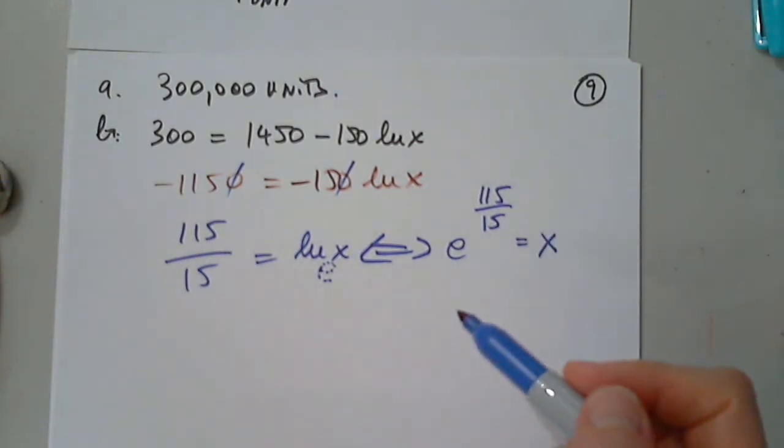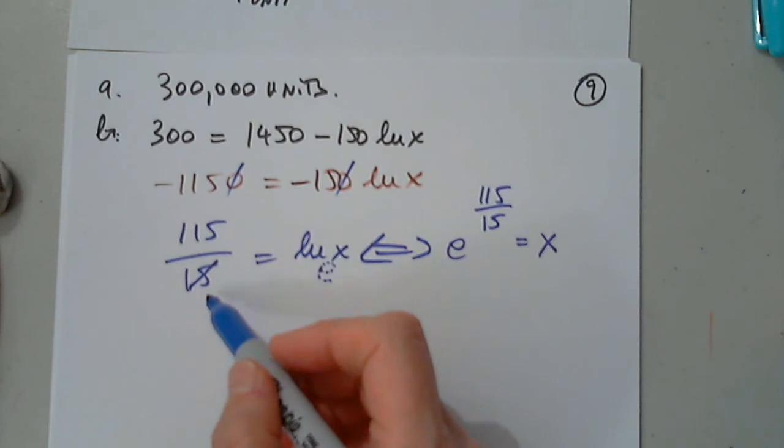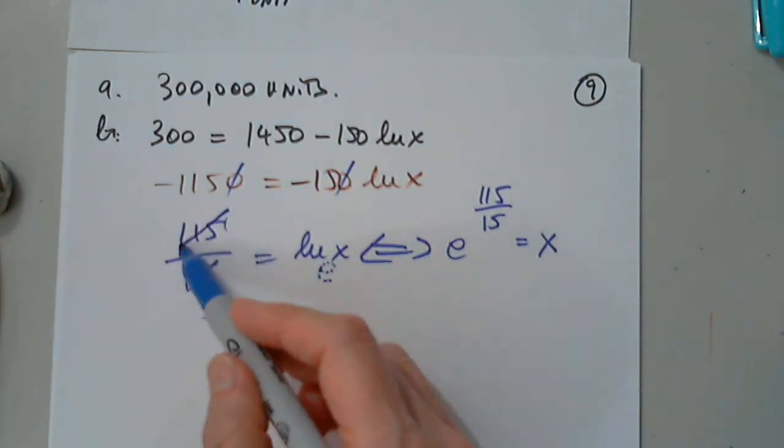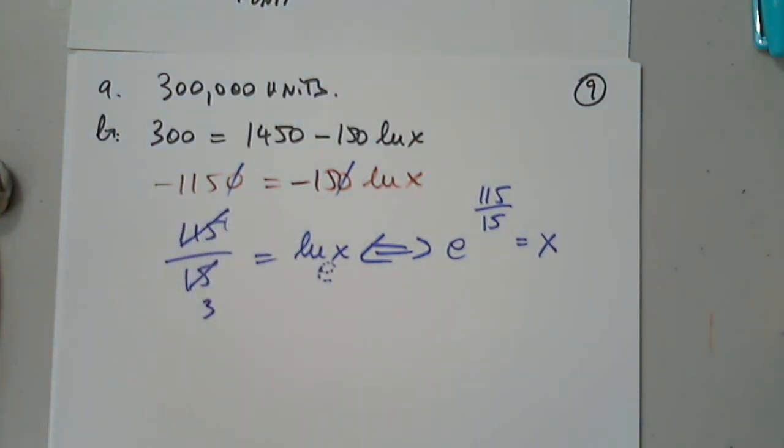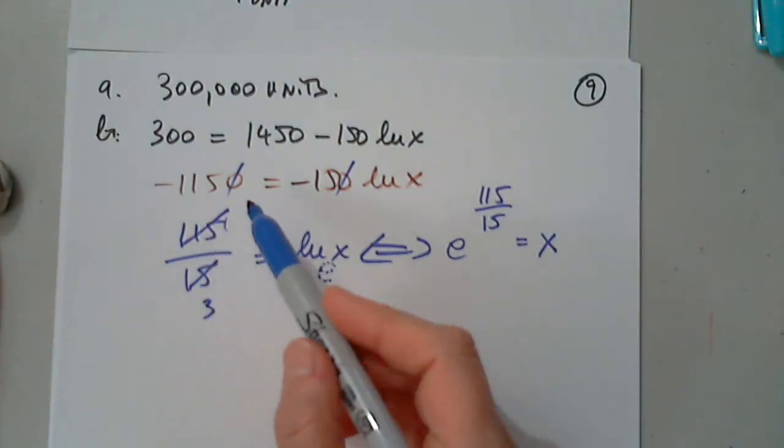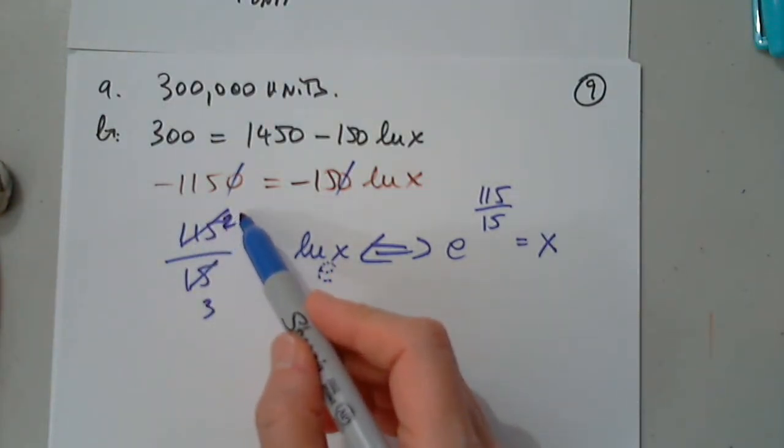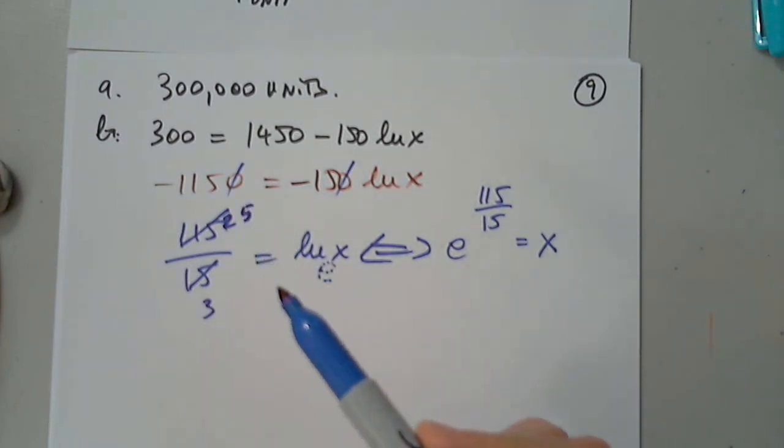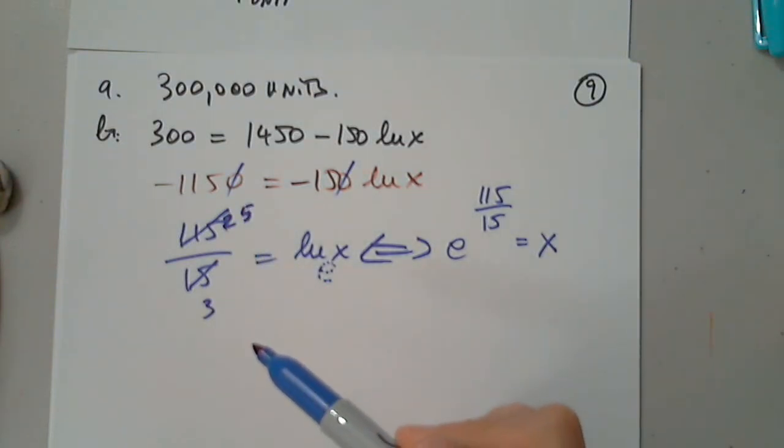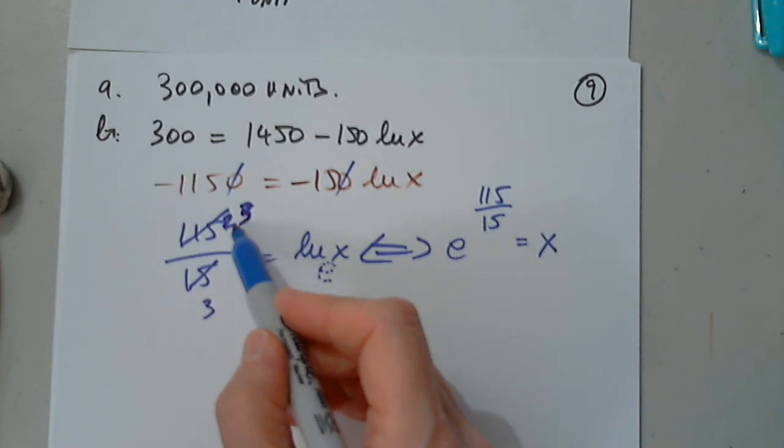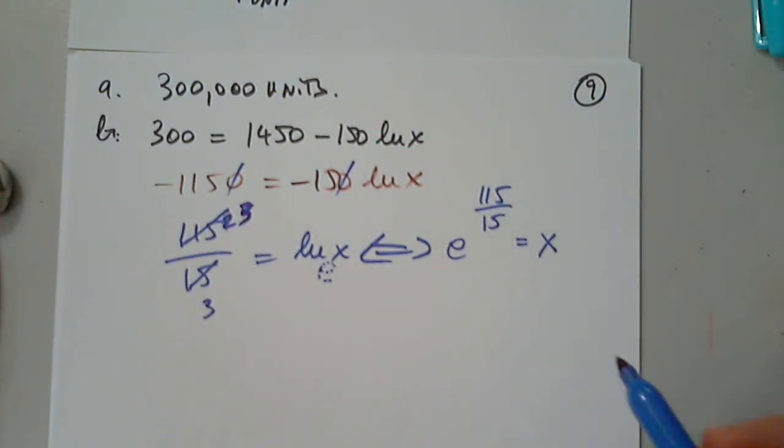So when I simplify, can I simplify here by 5? And I get 3. And by 5 here, somebody's coming. And by 5 here, and I have 25, is it? 23. 23. Thank you. So there is nothing I can do. I still have to plug in the graphing calculator. 23. No matter what. So let's take a look.